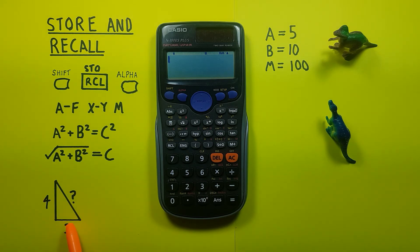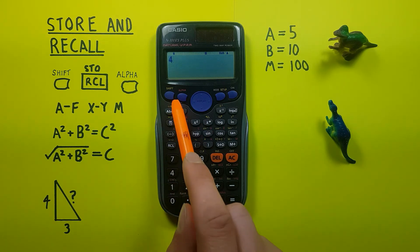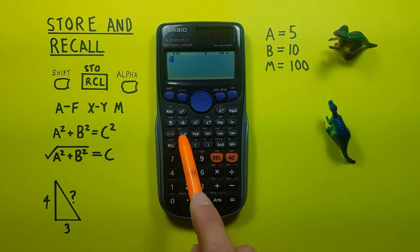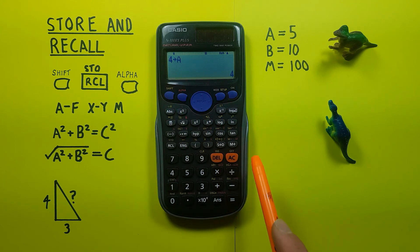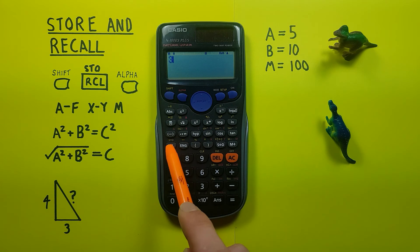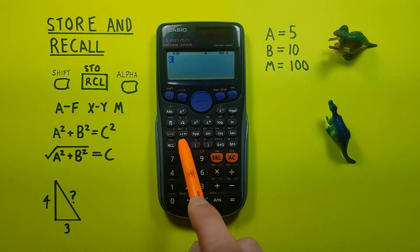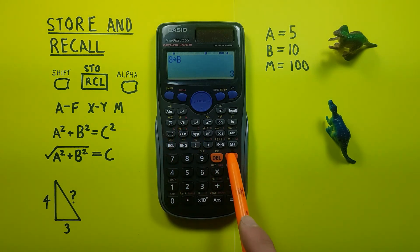So let's put 4 into our A, there we go, and 3 into our B, shift, store B, all right, there we go.